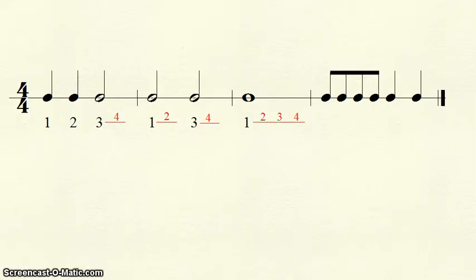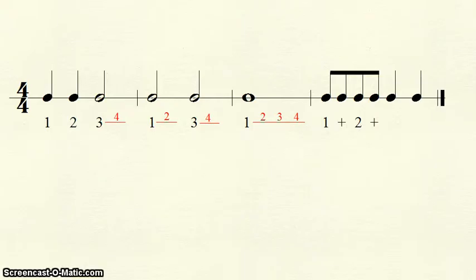The last measure begins with four eighth notes. The first thing we write in the measure is a one. The second half of that beat is signified with an "and." Same with the second beat — we write two and. The final quarter notes each receive one beat, so they get three and four, respectively.